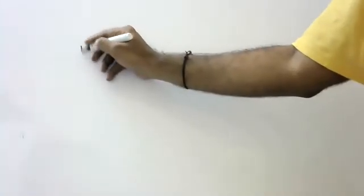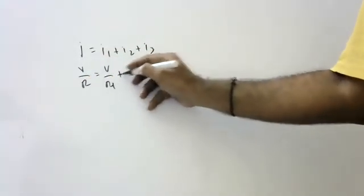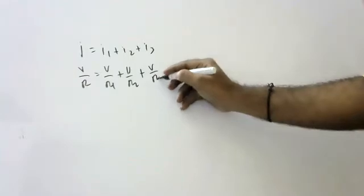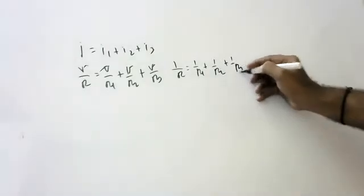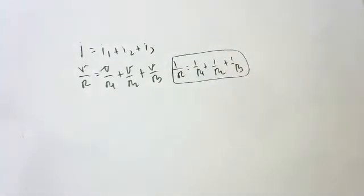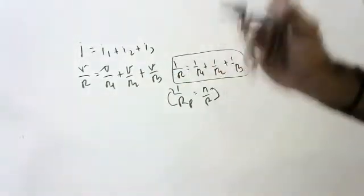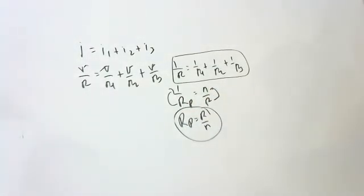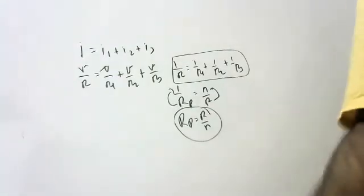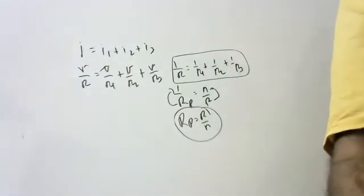So this is about parallel connection. In parallel connection: total current I = I1 + I2 + I3; using Ohm's law, 1/R_parallel = 1/R1 + 1/R2 + 1/R3. If all resistors are the same, R_parallel = R/N. Practice as many numericals as possible — the more numericals you practice, the stronger you become in the subject. Thank you.